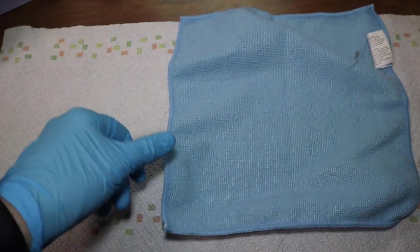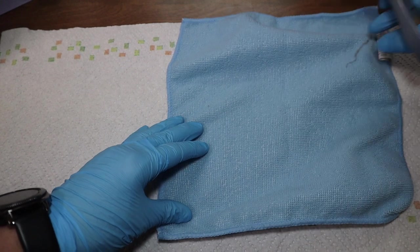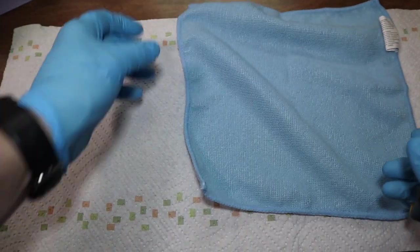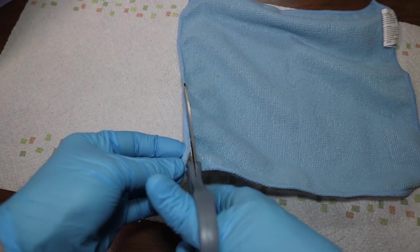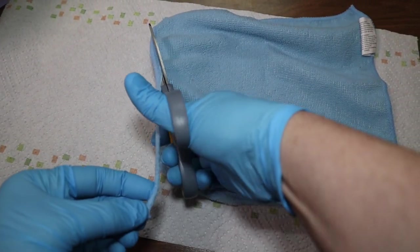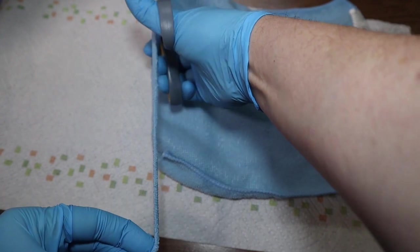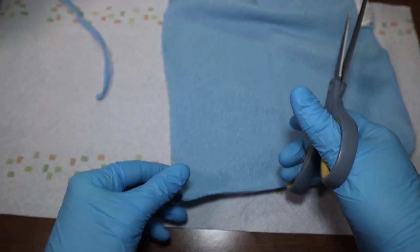So for the wick you can use anything that'll wick water or nutrients. I use these microfiber cloths. Maybe not the best thing but they seem to work fine. You could use like the little corner strip here and also just the middle part. I just need to cut a few of these anyway.